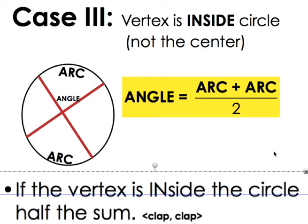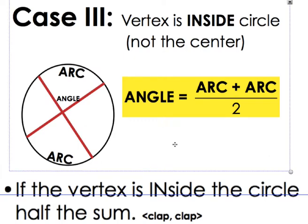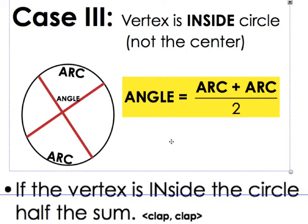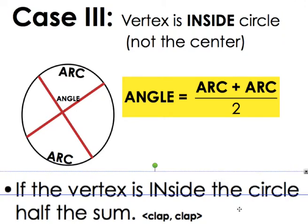Okay, so this is case three. We're still talking about angles inside of a circle. This angle is inside the circle if the vertex is inside the circle but it's not the center.